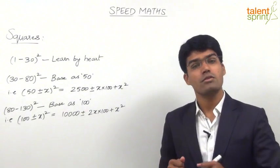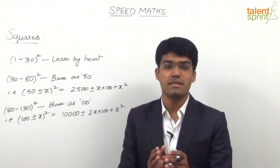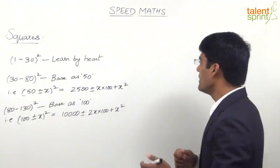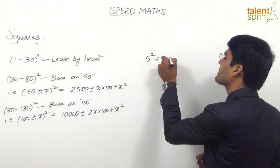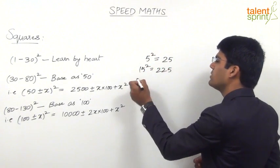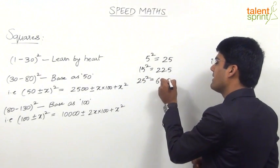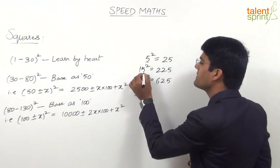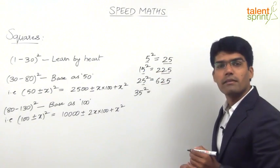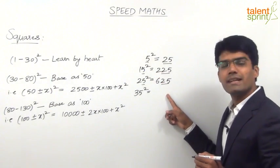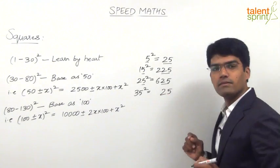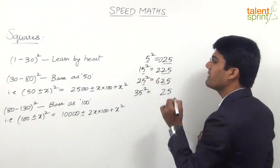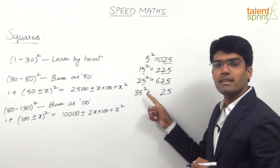The next point is how to find squares of numbers ending with 5. This is a special case — it is a very simple job. We know that 5 squared is 25, 15 squared is 225, 25 squared is 625. What is 35 squared? Whenever a number ends with 5, its square always ends with 25. So 35 squared must end with 25. The only concern is what is the remaining part of the answer — for 5 it is 0, for 15 it is 2, for 25 it is 6.